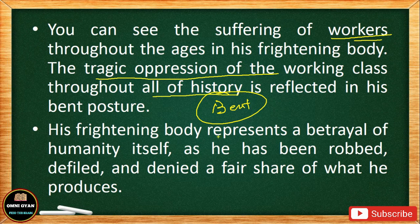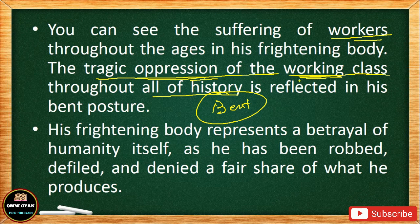This exploitation of the working class has not just happened today — it has been occurring since long time. The working class has always been the target of the rich people, beaten and made to work even more than animals. Even animals get a little bit of rest, but not these workers. History is evident of all the exploitation that the working class has received from the capitalists and the rich and powerful people.